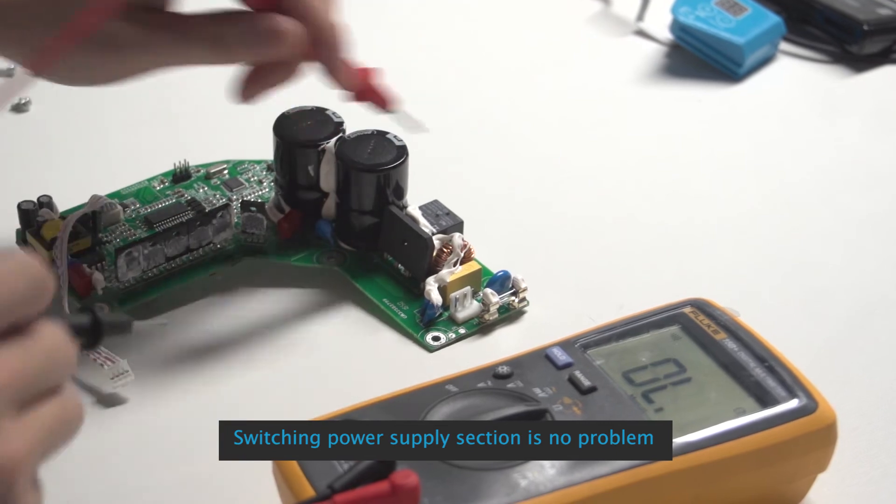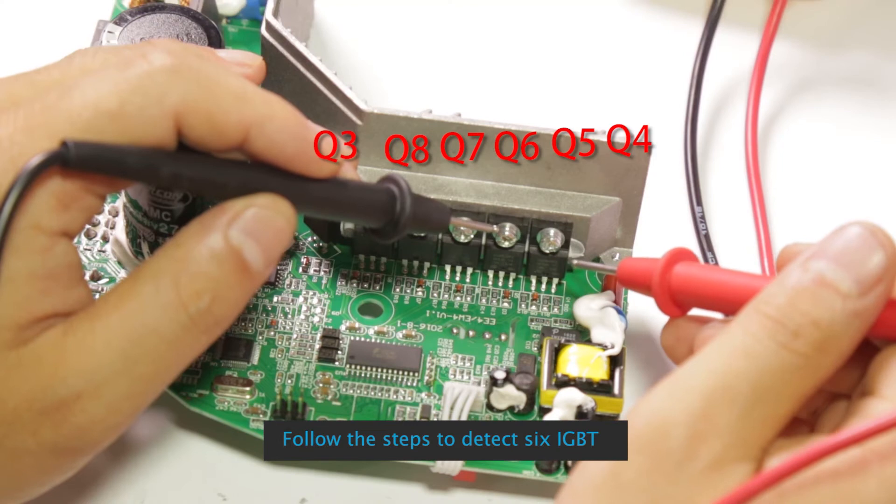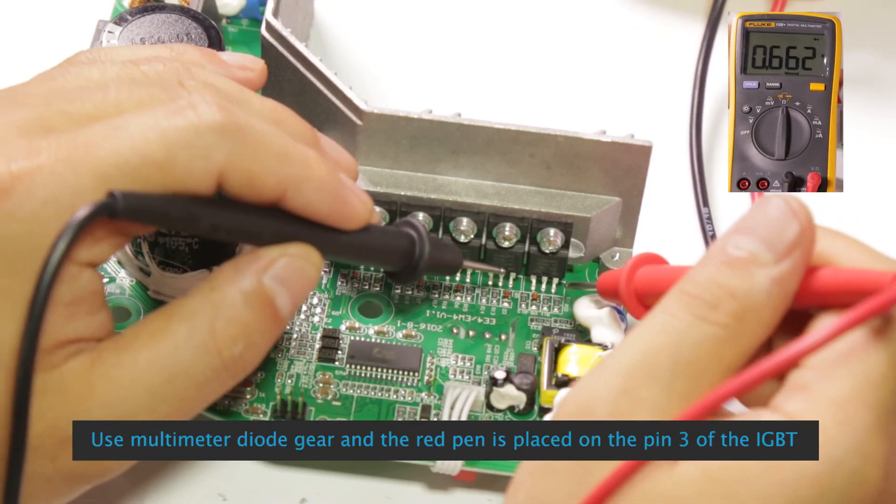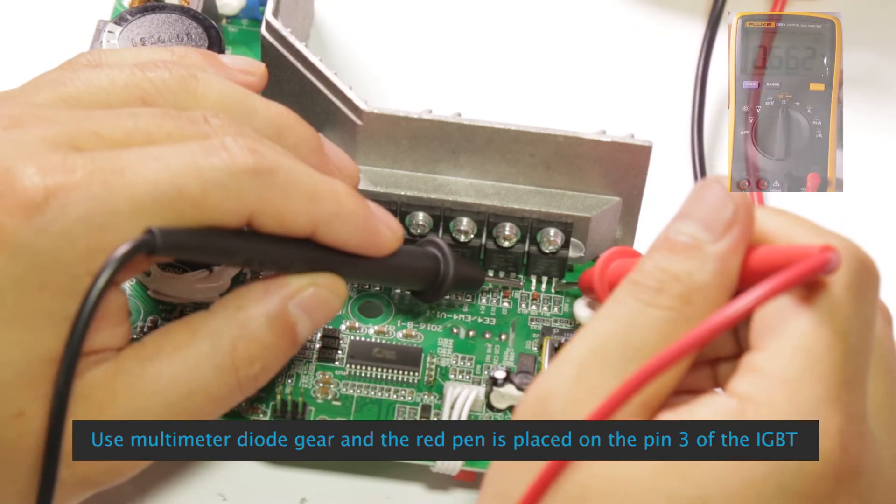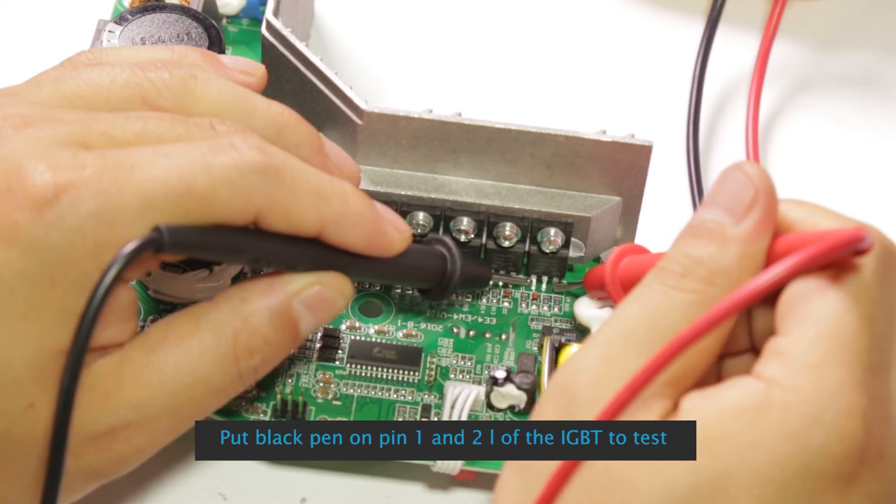Switching power supply section is no problem. Follow the steps to detect 6 IGBT. Use multimeter dial gear with the red pen placed on pin 3 of the IGBT. Put black pen on pins 1 and 2 of the IGBT to test.